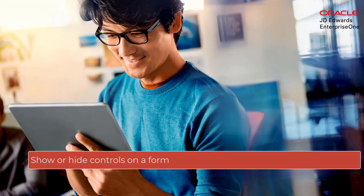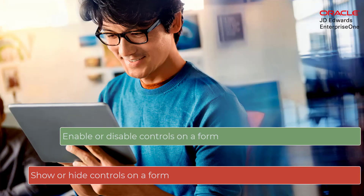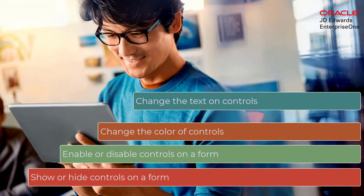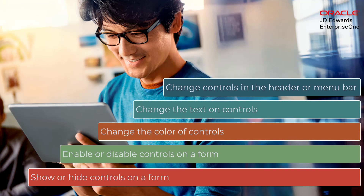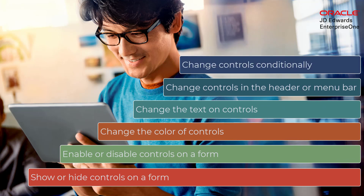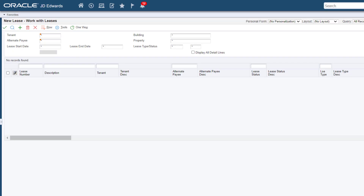Form Control Extensions are the latest enhancement to Logic Extensions. You can use Form Control Extensions to show, hide, enable, disable, change the text, or change the color of controls on the form. And because Form Control Extensions are part of Logic Extensions, you can use Conditional Processing to change the controls based on some data on the form itself.